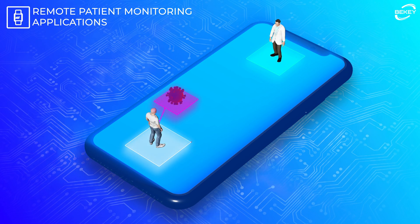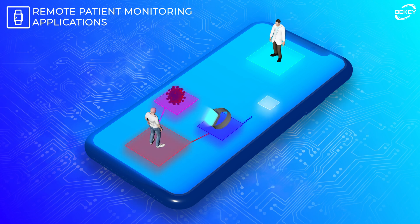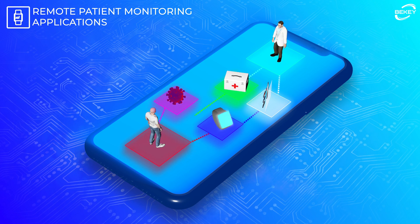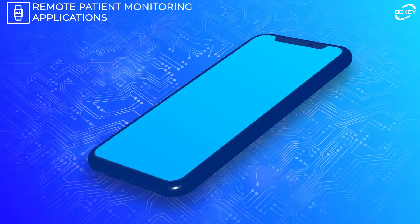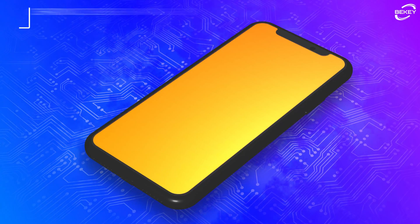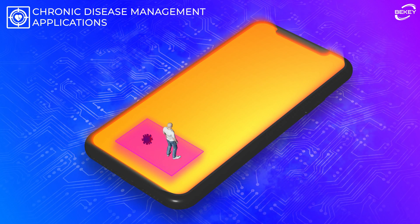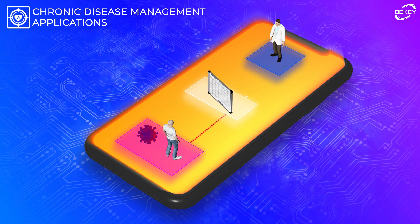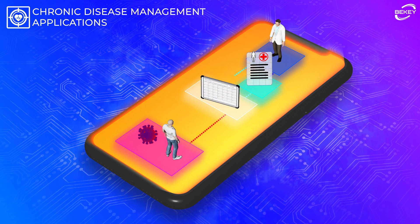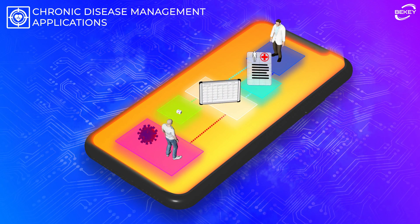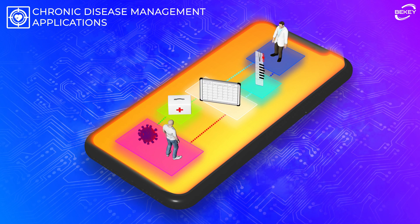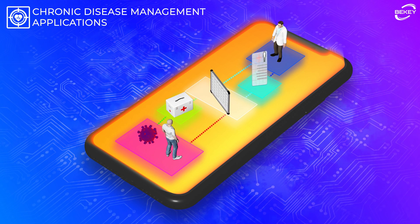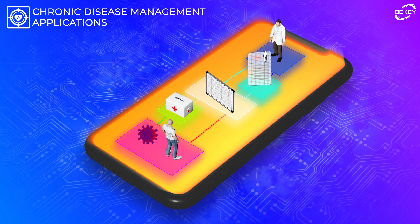RPM apps highlight early signs of impending disease, allowing doctors to take a proactive approach to care. Chronic disease management apps enable systematic care delivery and help patients reduce on-site hospital appointments and readmissions by engaging them in regular health data exchange.